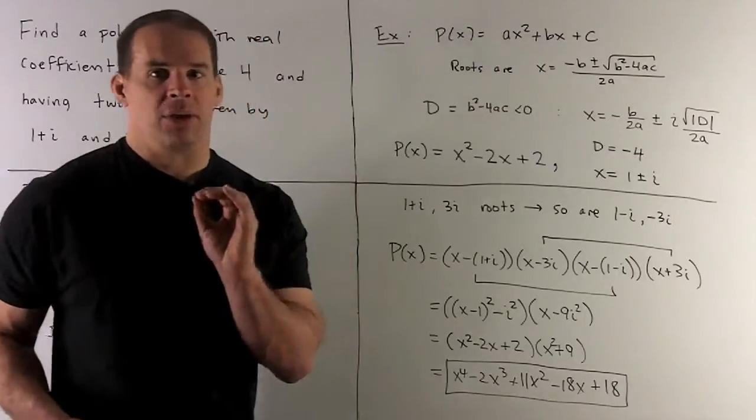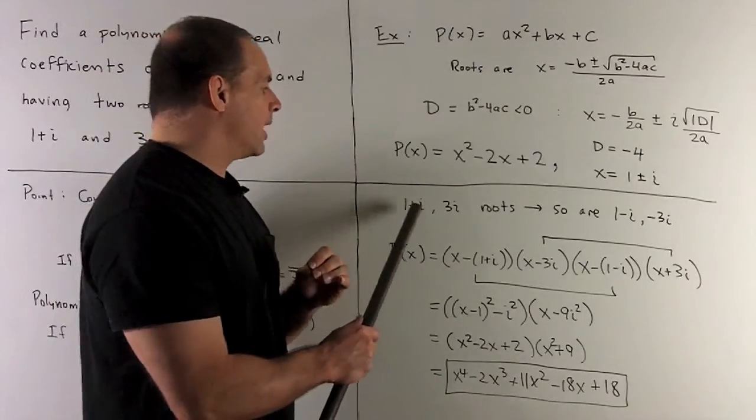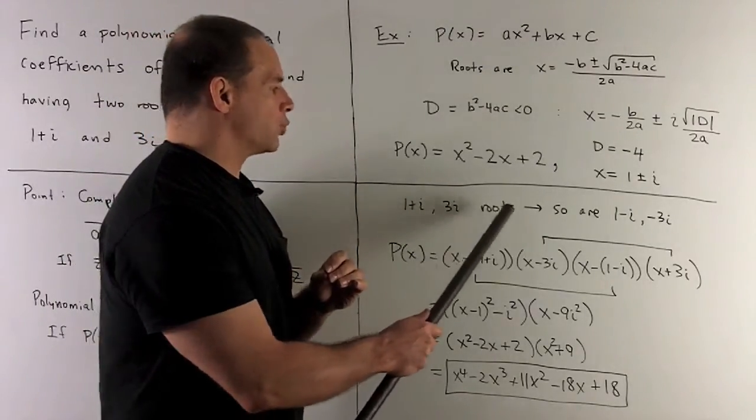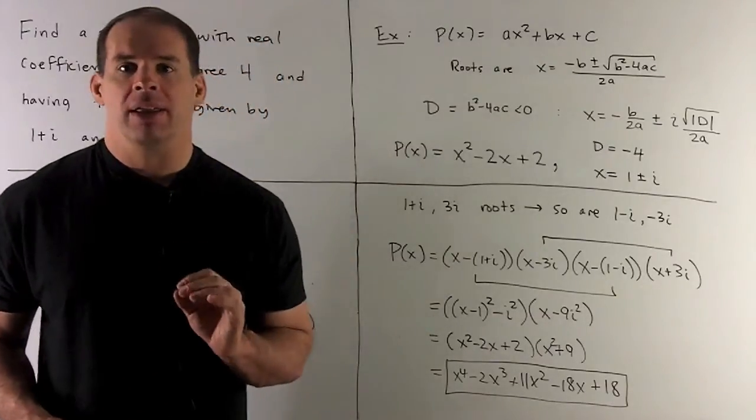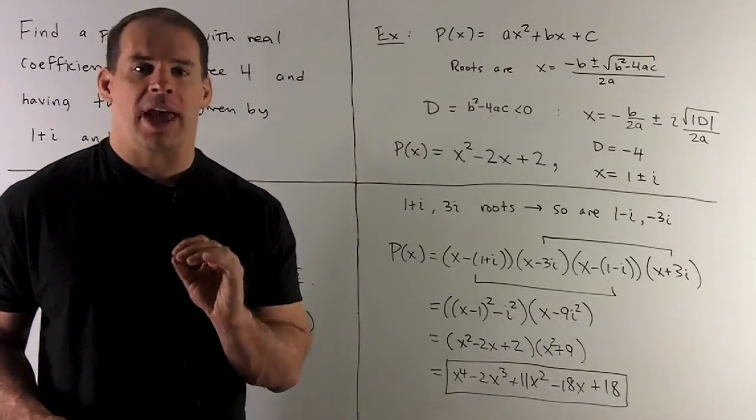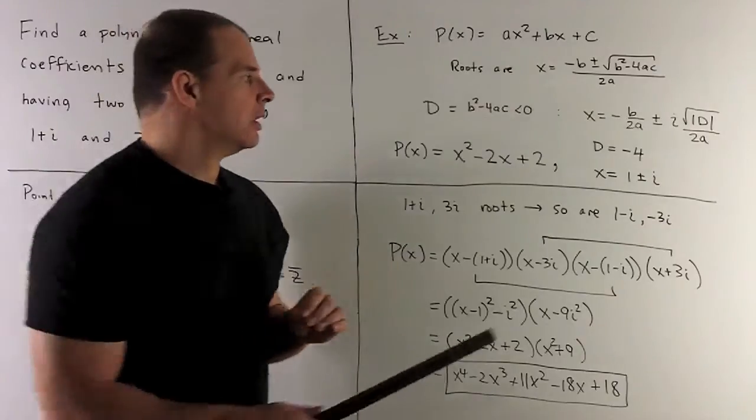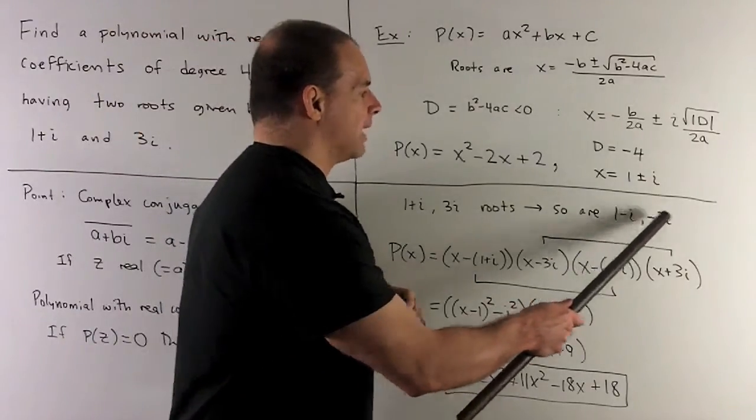Back to the original problem. I have 1 plus i, 3i as roots. So I have to throw in the complex conjugates if we want to have a real polynomial. So we'll have 1 minus i and minus 3i.